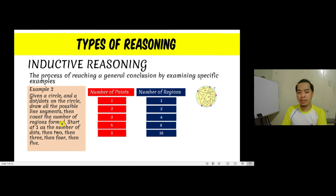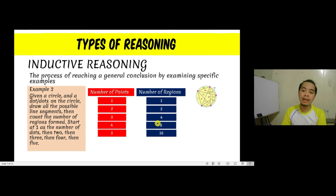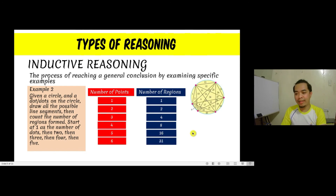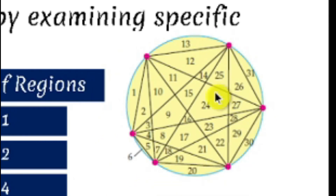The question is: how many regions can we create based on the number of points on the circle? From our observation of the first few specific examples, logically we would say the next value should be 32 — it seems to be doubling each time. However, there are actually 31, not 32, regions when the number of dots on the circle is six, as we can verify using this figure.